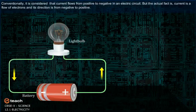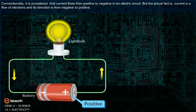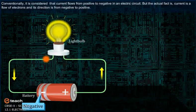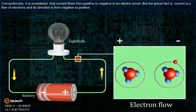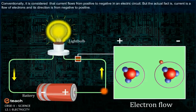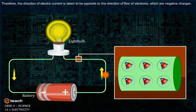Conventionally, it is considered that the current flows from positive to negative in an electric circuit. But the actual fact is, current is a flow of electrons and its direction is from negative to positive. Therefore, the direction of electric current is taken as opposite to the direction of flow of electrons, which are negative charges.